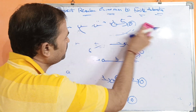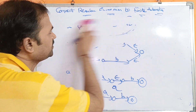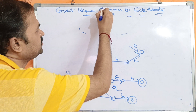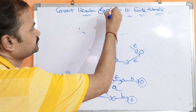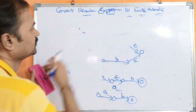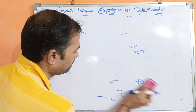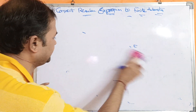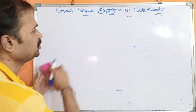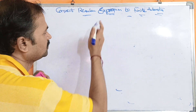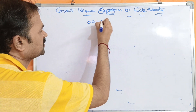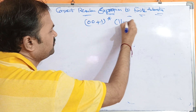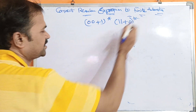Now let us see an example in order to convert a regular expression into finite automata. Let the regular expression be (00 plus 1) whole star into (11 plus 0) whole star.